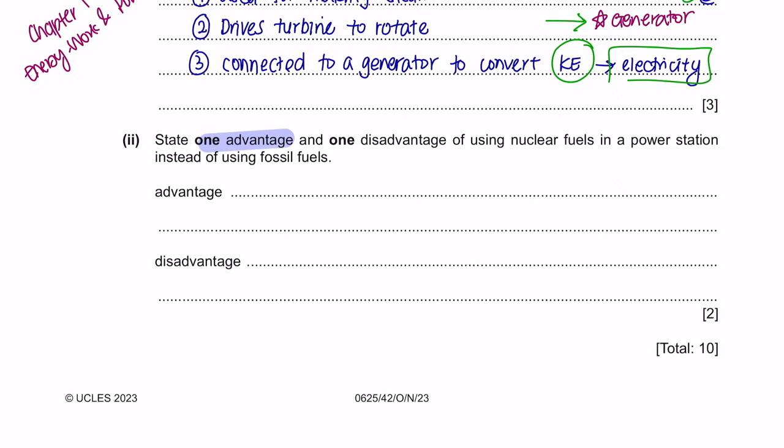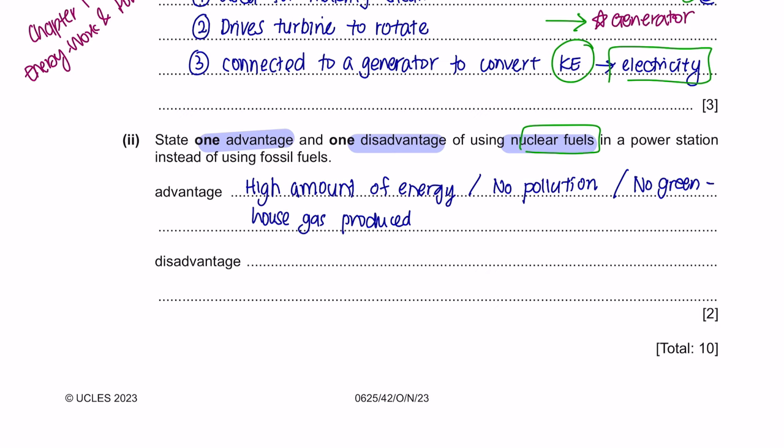Next, part 2. State one advantage and one disadvantage of using nuclear fuels in a power station instead of using fossil fuels. So, the advantage of nuclear fuels is that nuclear fuels can produce a large amount of energy and there will be no pollution or even greenhouse gases. And the disadvantage is that since this is a nuclear fuel, nuclear fuel will produce nuclear waste, meaning that there is a potential of a leak of radiation.